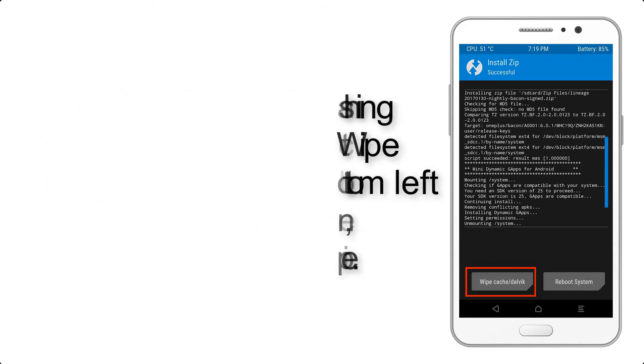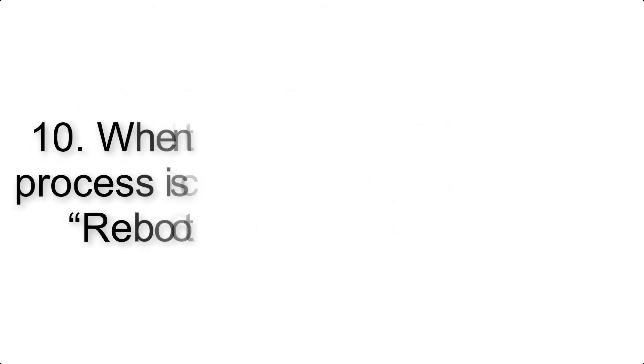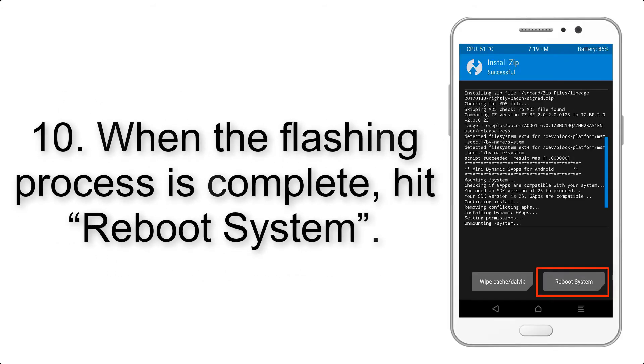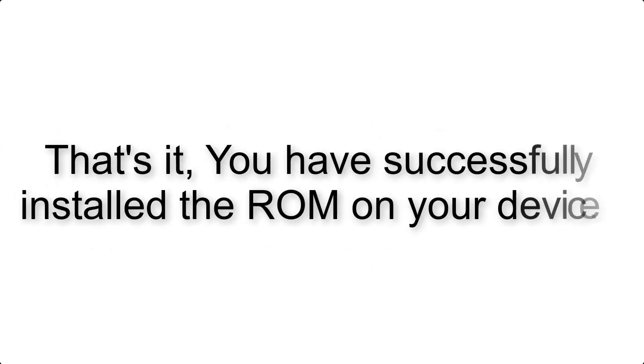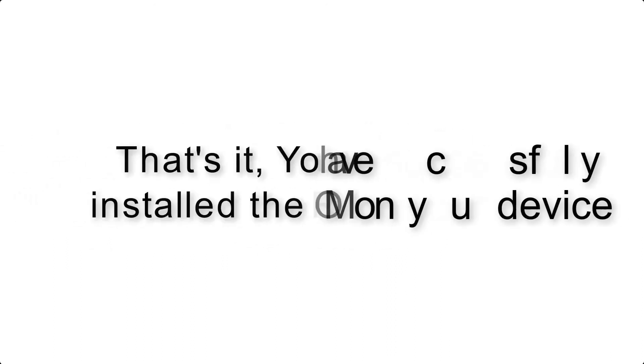Swipe to wipe. Step 10: When the flashing process is complete, hit Reboot System. That's it — you have successfully installed the ROM on your device.